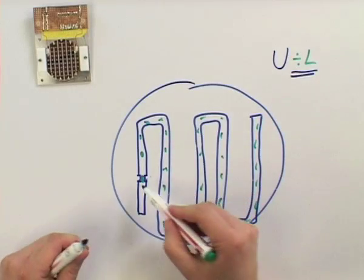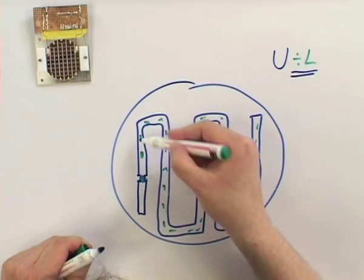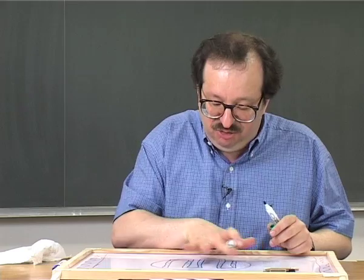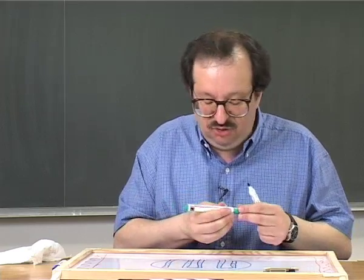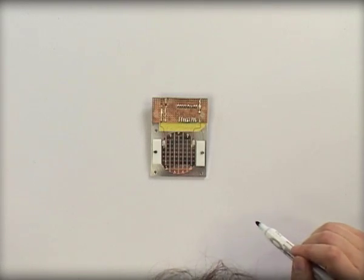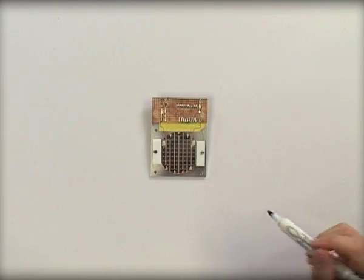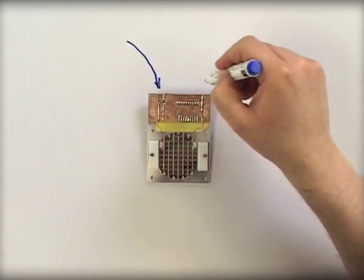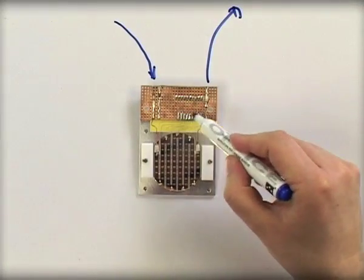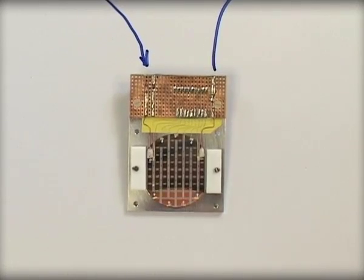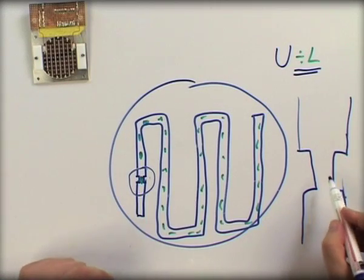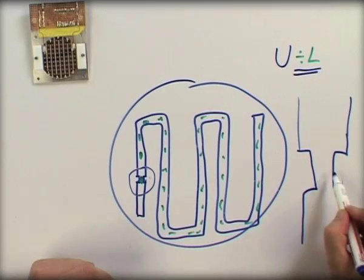At the beginning of the short circuit, only specific parts of the line will switch — each constriction point in turn — and in this case all the lines contribute to limiting the current. We can distribute all the power over the whole wafer. This is one of the prototypes built to test this new design. In this prototype, the current comes in here and flows through the meander, and we put voltage taps here to measure each line of the meander in order to see the behavior during the short circuit. In this new design, we split each constriction in two.